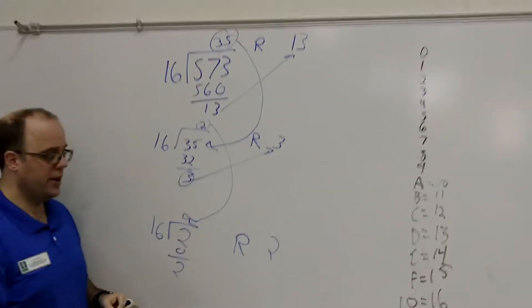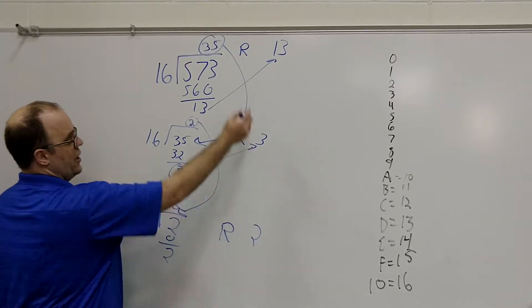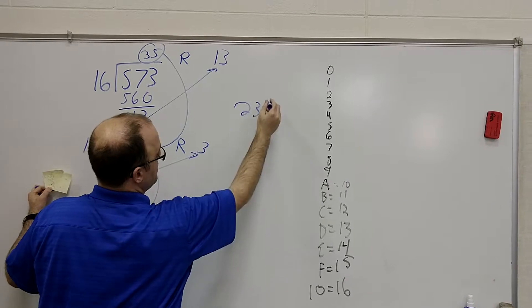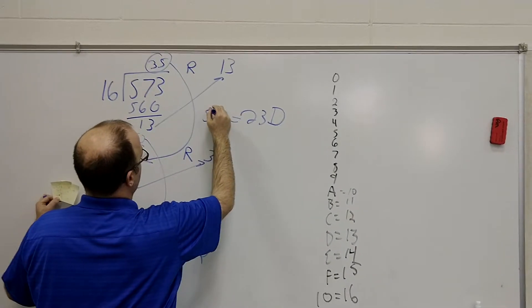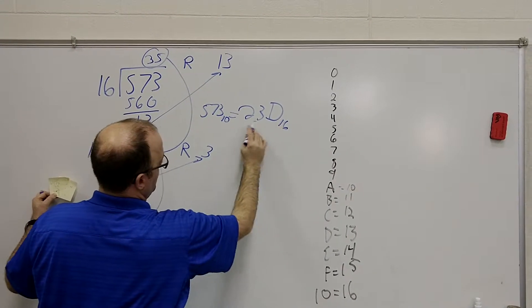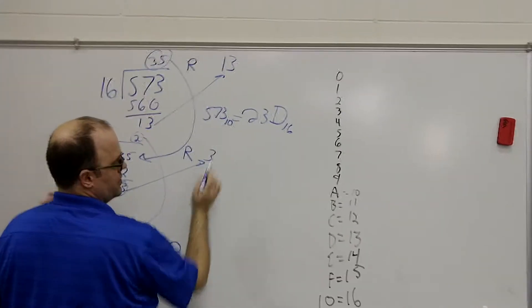And just like with binary, I go for my last digit, this is my most significant bit, and go back. And if I do 23, 13 is D, this is the decimal, and this is the hexadecimal equivalent to binary.